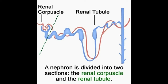The nephron, also sometimes called the uriniferous tubule, is the fundamental functional unit in the kidneys. It is in the nephrons that urine is separated from blood, and some of the water and salts in it are reabsorbed. It is responsible for maintaining the pH and temperature of the bloodstream.